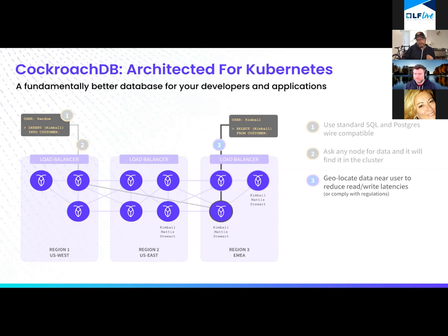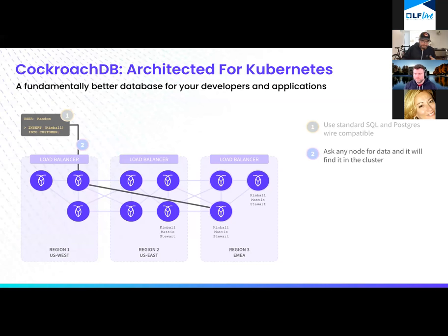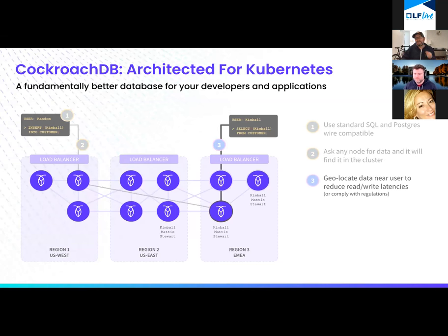Number three: if I'm asking for a record and it's in region one, but I need to go all the way to Europe and back, that's not efficient. How do we geo-locate data near users to reduce read and write latencies? CockroachDB has a unique capability called geo-partitioning that allows us to do exactly that. So when a user like Spencer Campbell asks for his data, if he's in Europe, we can actually geo-locate and geo-partition that data near him.